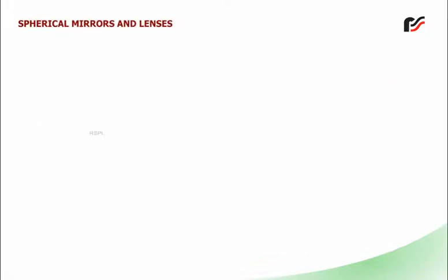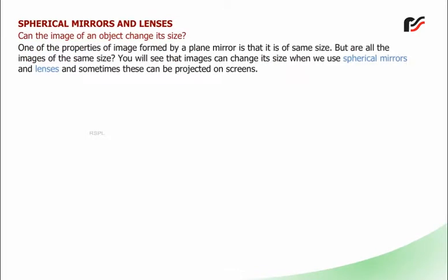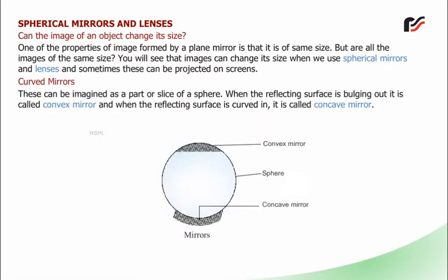Spherical mirrors and lenses: Can't the image of an object change its size? One of the properties of an image formed by a plain mirror is that it is of the same size, but are all images the same size? You will see that images can change size when we use spherical mirrors and lenses, and sometimes these can be projected on screens. Curved mirrors: These can be imagined as a part or slice of a sphere. When the reflecting surface is bulging out, it is called a convex mirror, and when the reflecting surface is curved in, it is called a concave mirror.